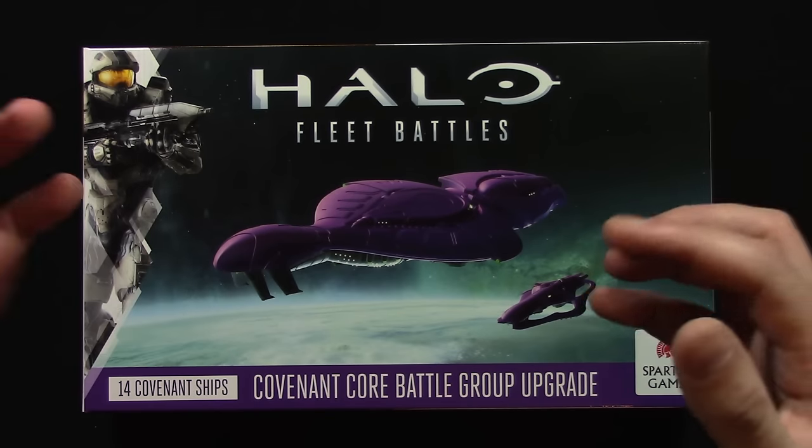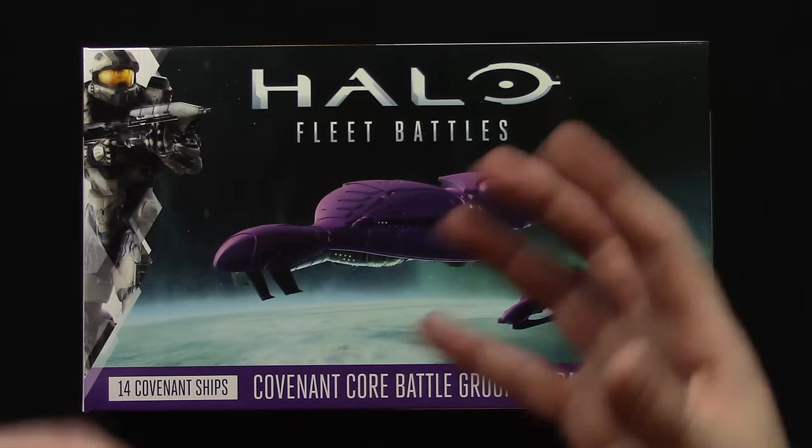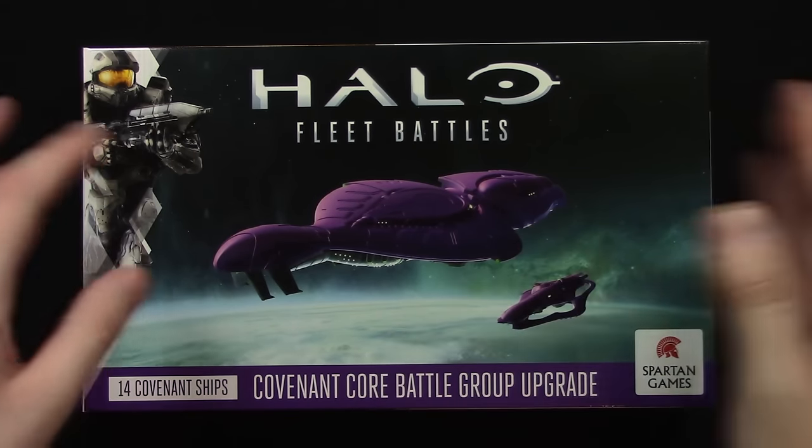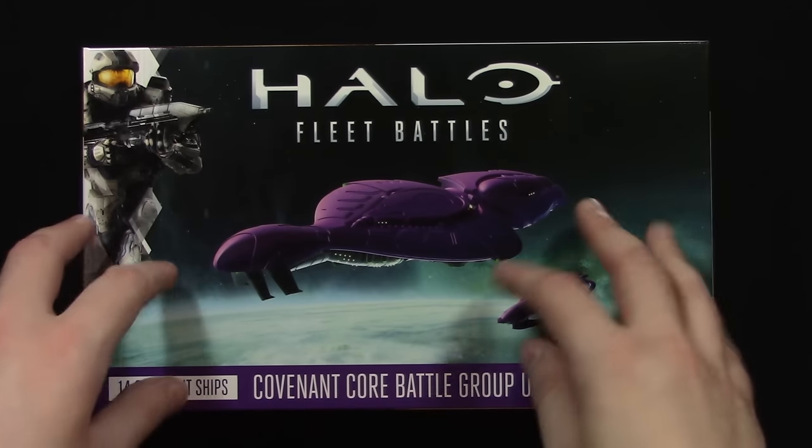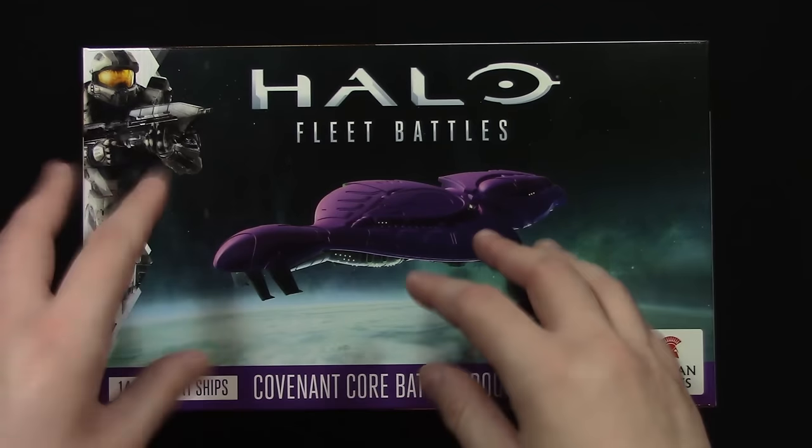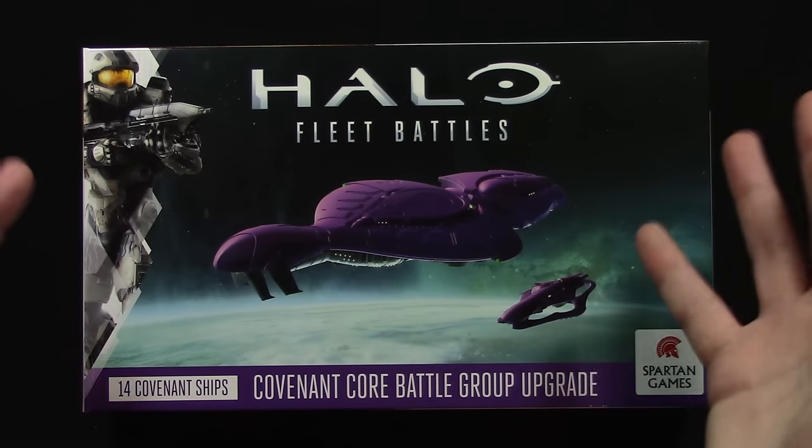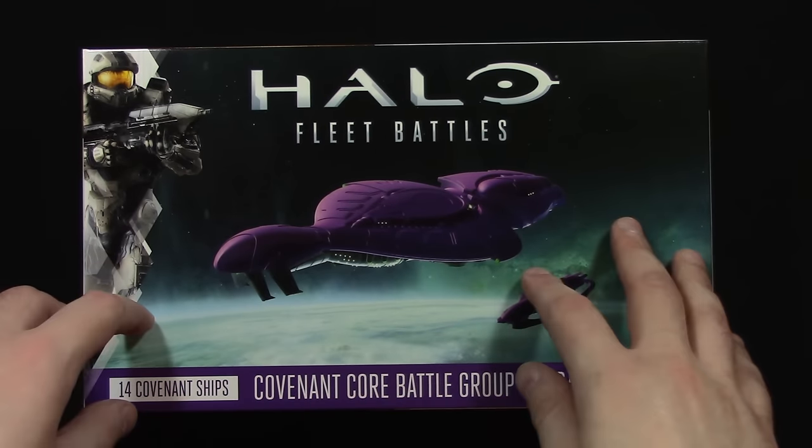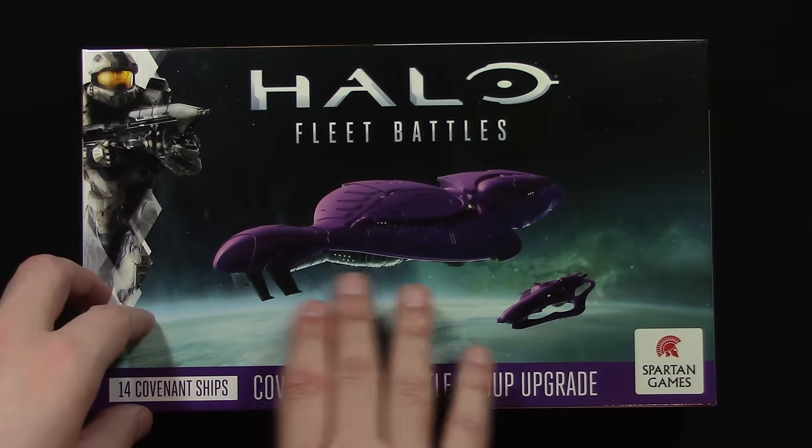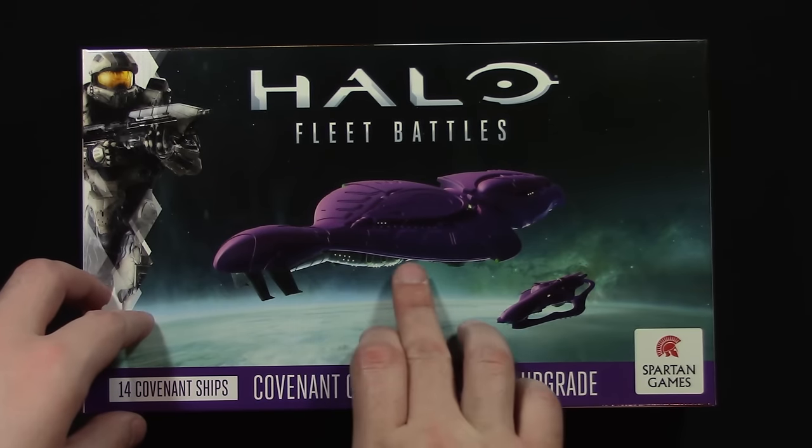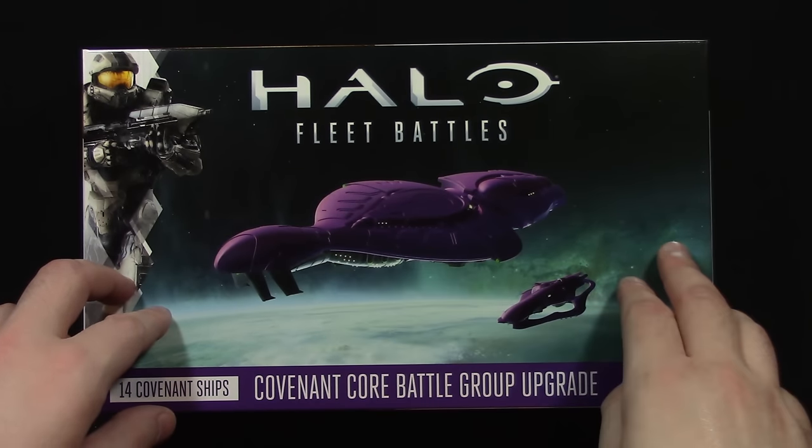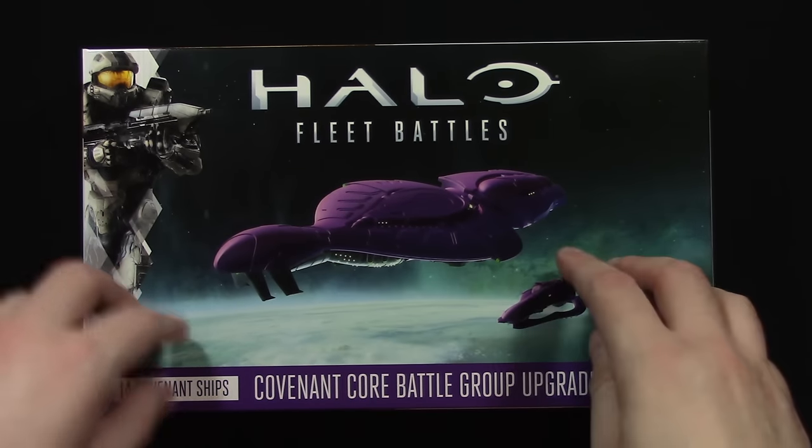And this is meant to extend the starter box. This is essentially wave one of upgrades for the game. So you bought a starter box and then the idea is that you get one of these boxes to upgrade your, in this case, your Covenant fleet or you get the UNSC box for your UNSC fleet and so on. And also this could be a nice painting guide as well. I especially like this kind of glow from the planet underneath the ship. That could be quite cool to maybe paint on a Covenant ship or even on a UNSC ship.